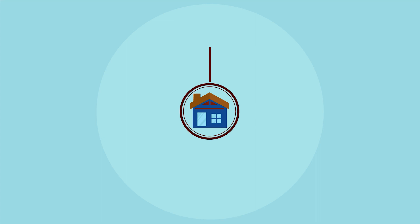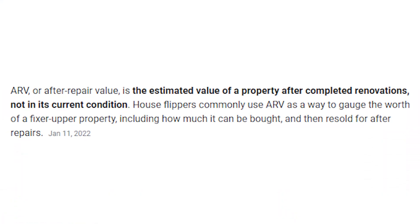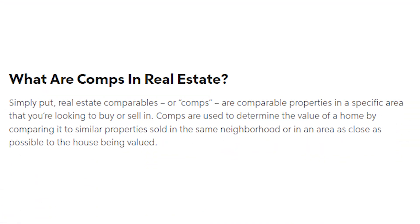The MLS has all the sold data for homes that have recently sold, and those essentially become comparable homes for any home you're trying to analyze. To flip a house, you first have to determine what to offer on it, and to do that you need to find something called an ARV — an after repair value. That's basically the value of what the home is going to be worth after you fix it up. To figure out the ARV, you use comps — comparable homes that have recently sold in similar condition and similar area.